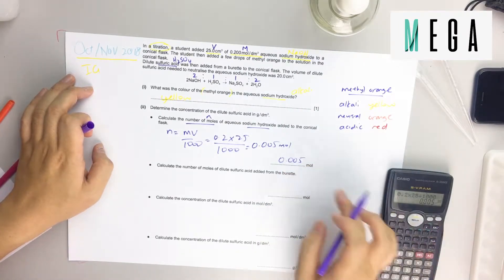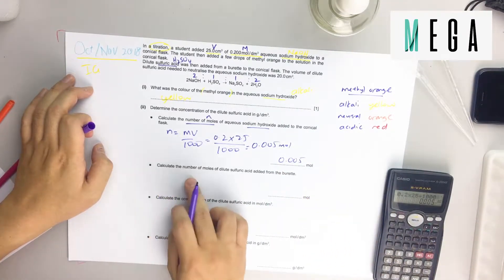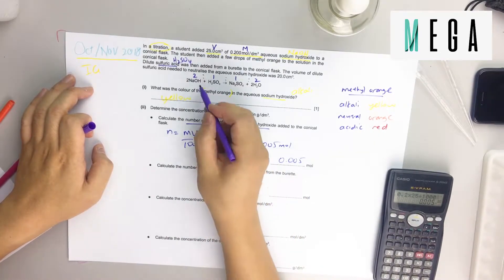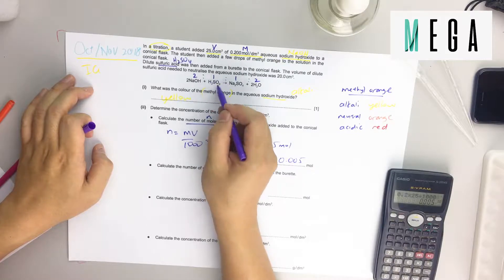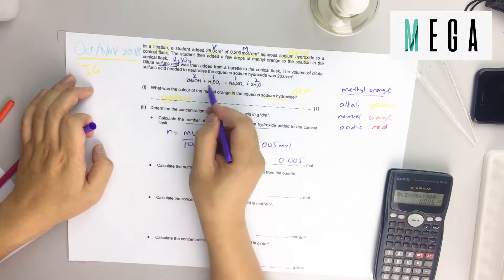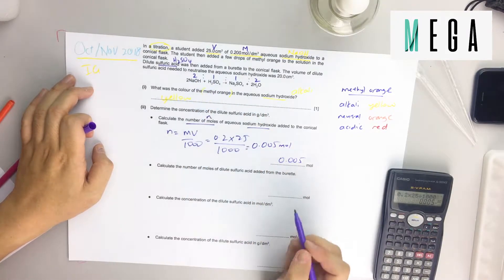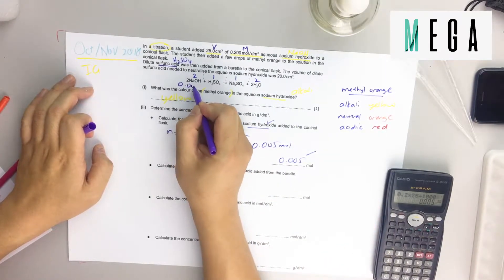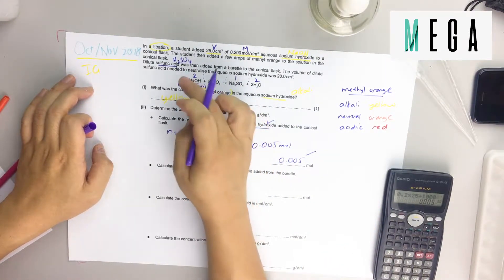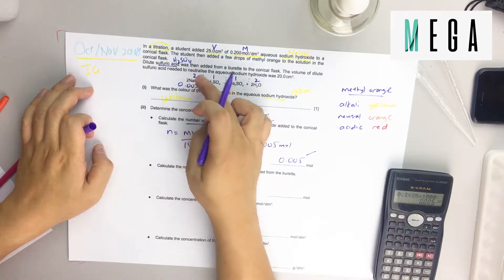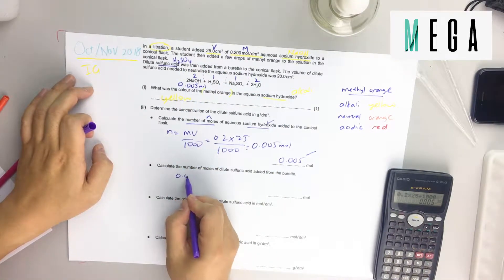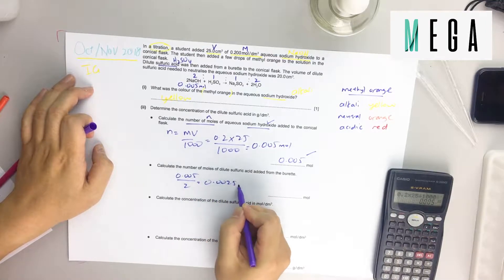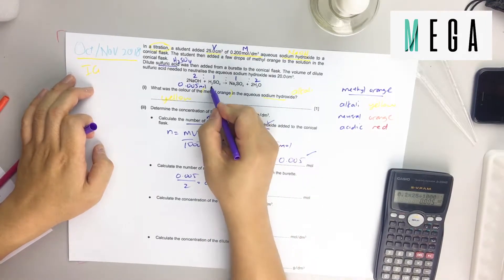Next question: calculate the number of moles of dilute sulfuric acid. From sodium hydroxide move to sulfuric acid. Use the equation 2 ratio 1. Since you have sodium hydroxide 0.005 mol, 2 ratio 1 will be divided by half. So 0.005 divided by 2 is 0.0025 mol.